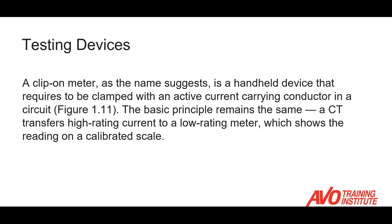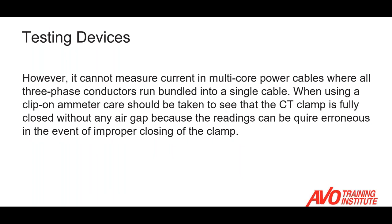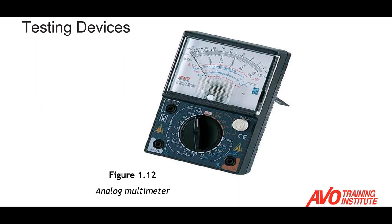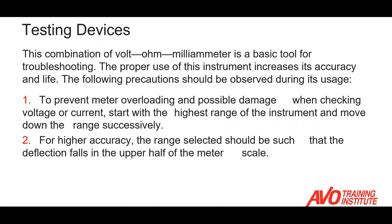A clamp-on ammeter, as the name suggests, is a handheld device clamped around the conductor. The basic principle remains the same as a standard ammeter, except we're using a current transformer to calibrate the current reading on a calibrated scale. This device works for AC and DC ranges of various currents and has a hold function to hold the reading. For smaller currents, we can use a multimeter. Various companies make different models with different functions — some multimeters come with an ammeter, voltmeter, and ohmmeter. As with any piece of test equipment, you need to read the manufacturer's documentation and be familiar with your meter before putting it in service.